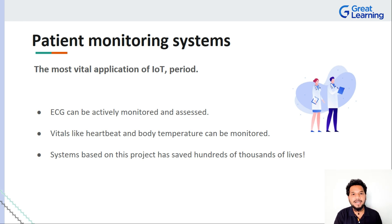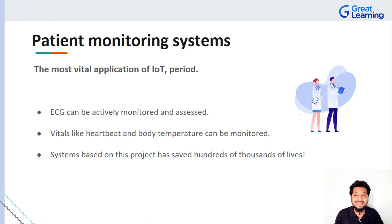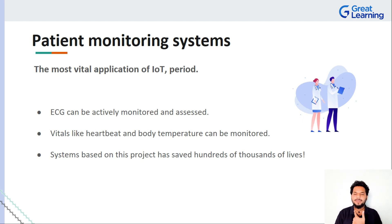Think of your smartwatch — modern smartwatches not only measure your heart rate, but also your temperature, saturated oxygen level (SpO2), and many other things. Apple watches can even measure your ECG or heart rhythm.